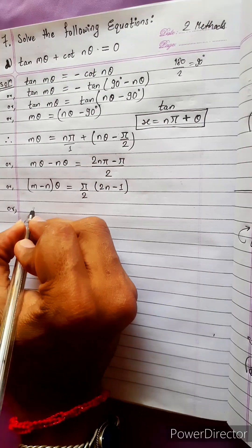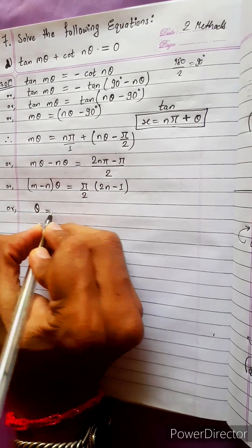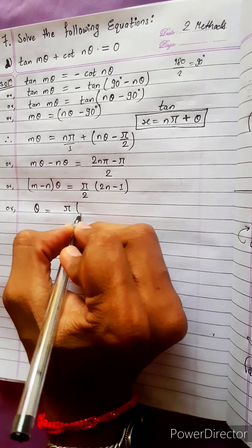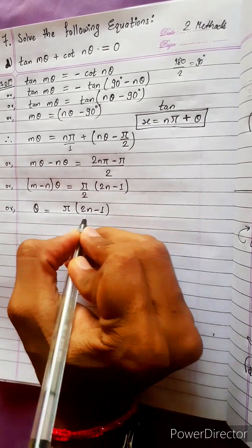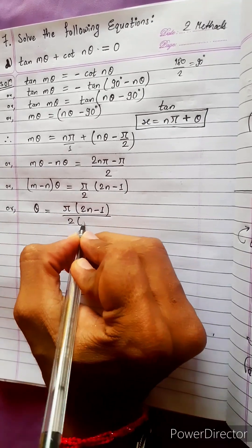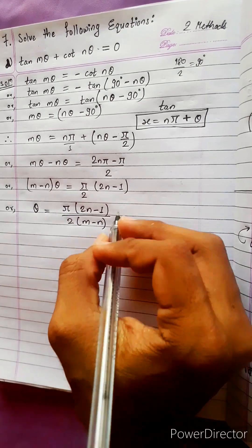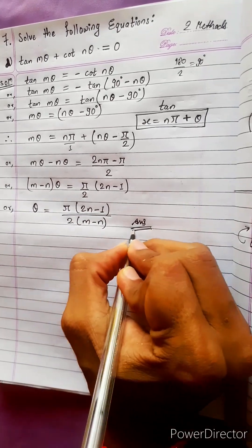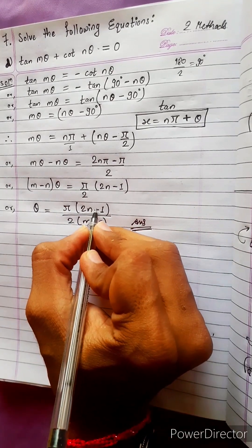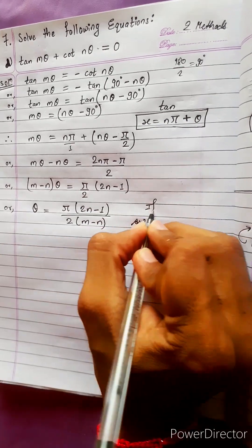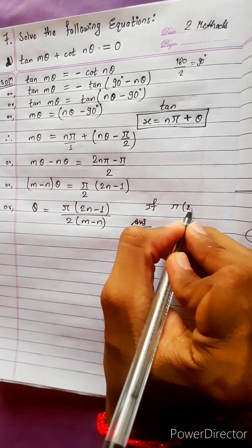Just pass we will get pi by 2 into 2n minus 1 divided by m minus n. If that is pi by 2 into 2n plus 1.